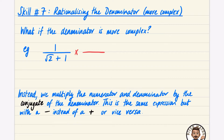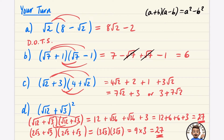We actually did an example earlier in the brackets video, skill number five, where we multiplied something like this by something else that gave an answer with no surds in it. We used the difference of two squares pattern — when you multiplied this by the same thing but with a minus, the square roots cancelled out and you were just left with an integer. The surds cancelled out, and we're going to use this idea of the difference of two squares to rationalize our denominator.